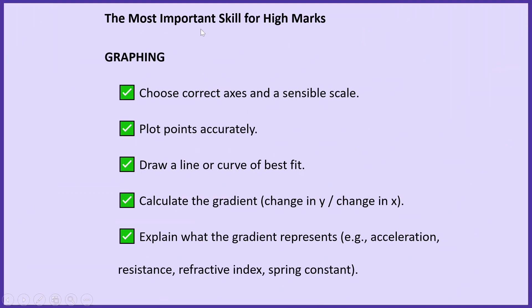Now let's talk about the most important skill for high marks in Science Paper 1: graphing. You need to know how to choose the correct axis and a sensible scale, plot points accurately — since Section C mostly involves graphing — and draw a line or curve of best fit. Also develop the skill to calculate the gradient.